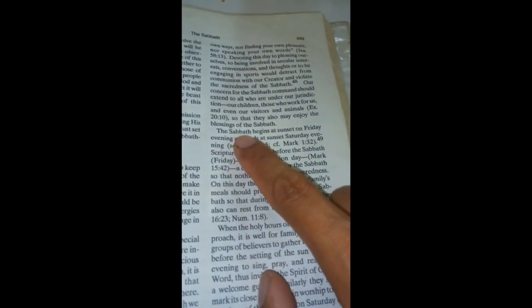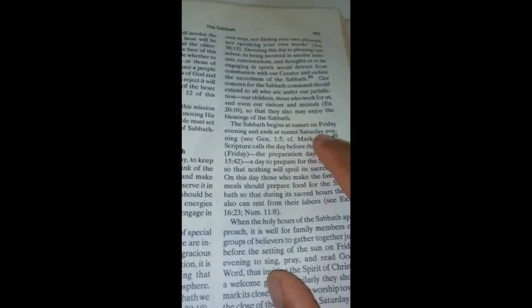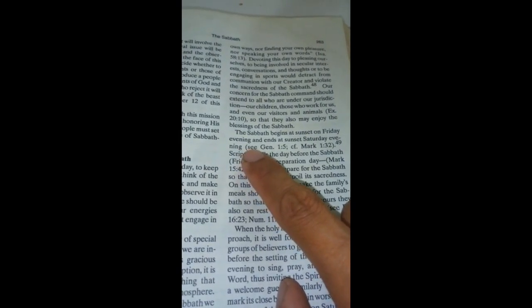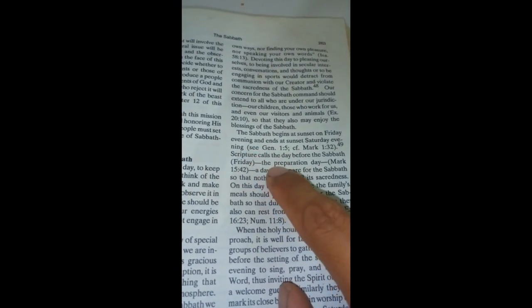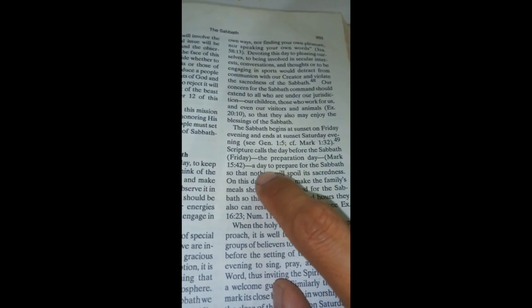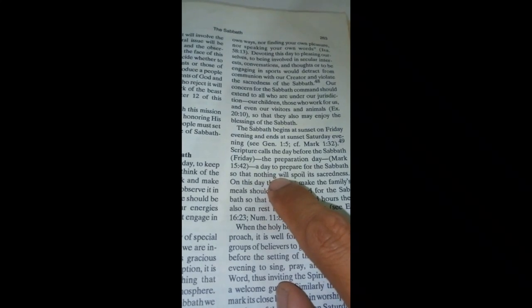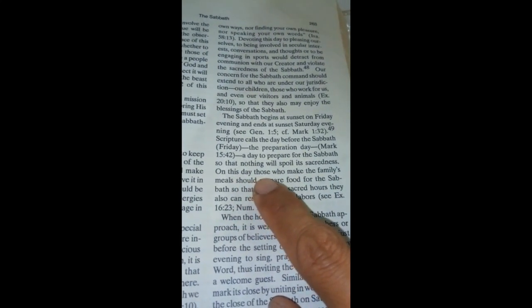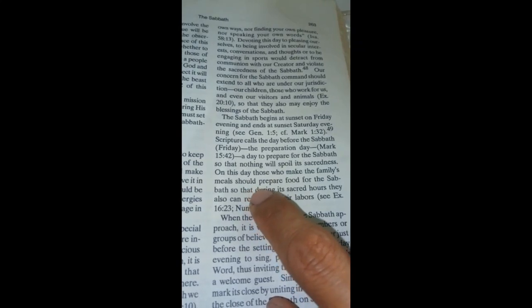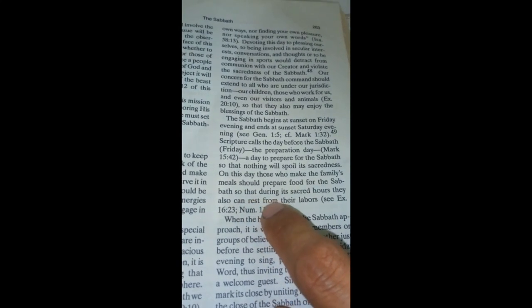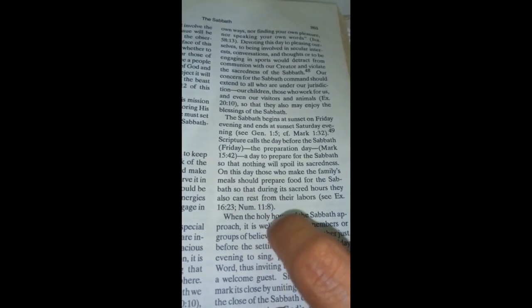And it says here, the Sabbath begins at sunset on Friday evening and ends at sunset Saturday evening. Scripture calls the day before the Sabbath the preparation day, a day to prepare for the Sabbath so that nothing will spoil its sacredness. On this day, those who make the family meals should prepare food for the Sabbath so that during its sacred hours they can also rest from their labors.